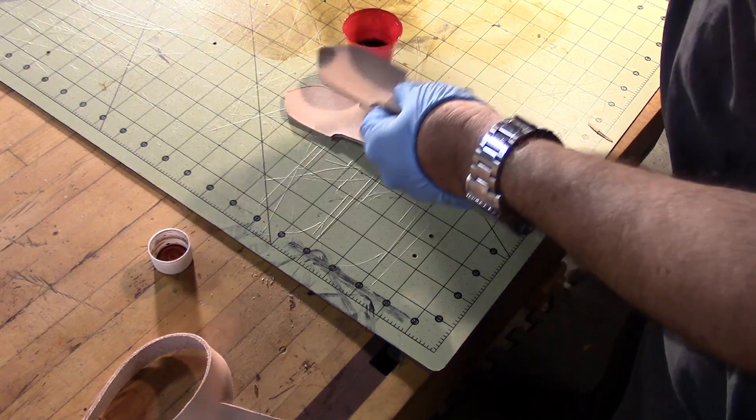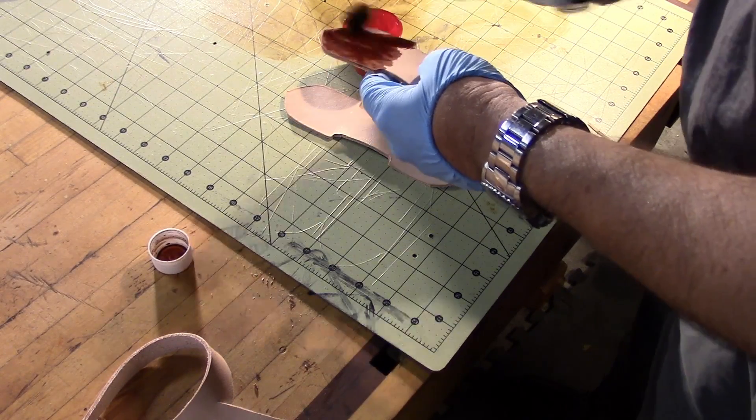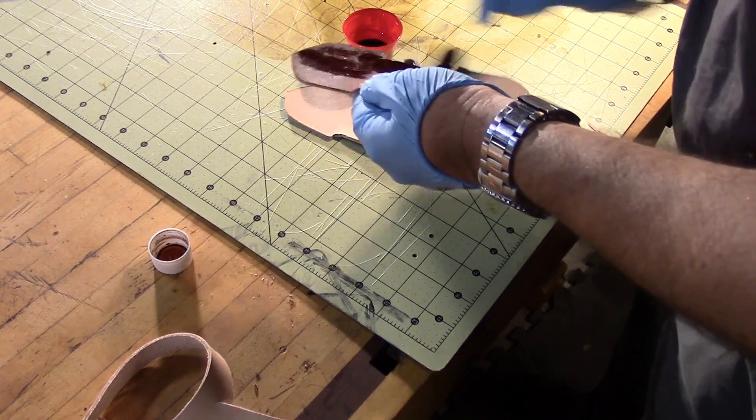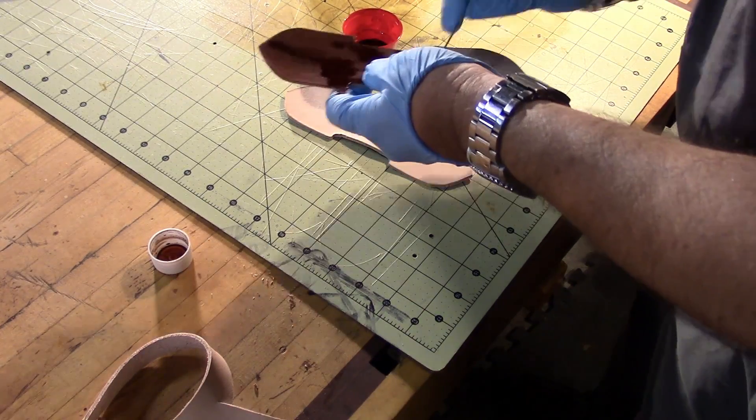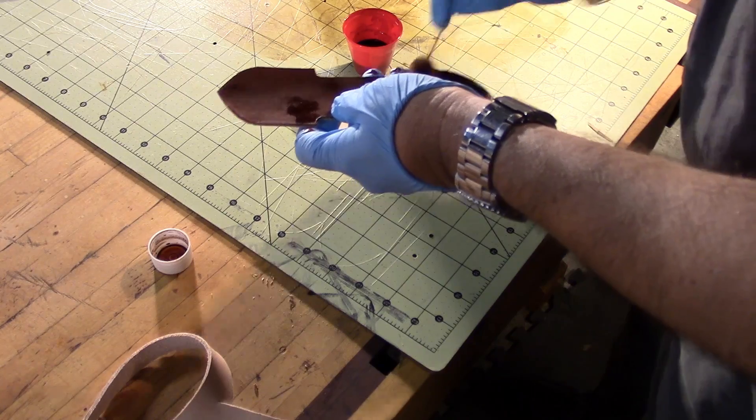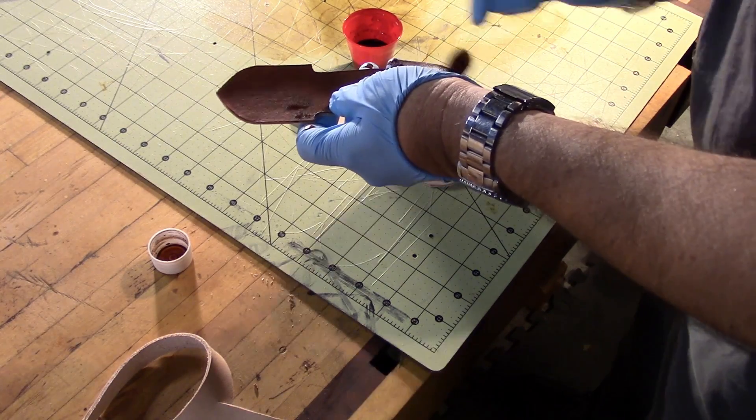Next we have to dye these pieces. I'm using Feebing Saddle Tan for this piece, a little lighter brown.